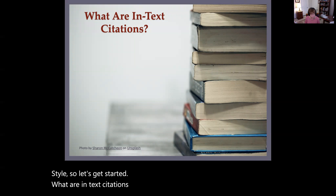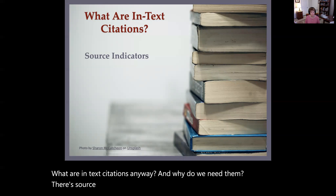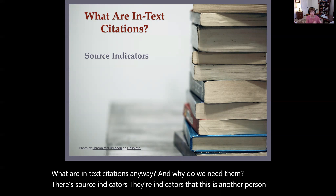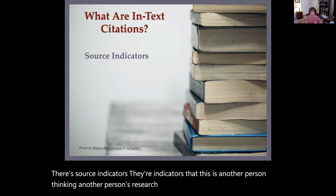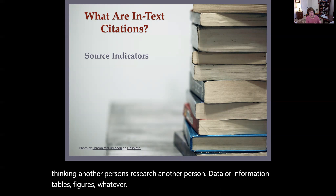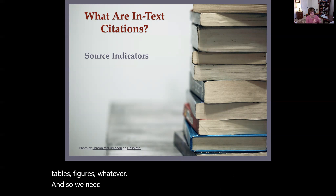So let's get started. What are in-text citations anyway, and why do we need them? Well, they're source indicators — indicators that this is another person's thinking, another person's research, another person's data or information, tables, figures, whatever. And so we need to cite and give them credit for that information.